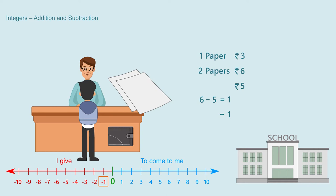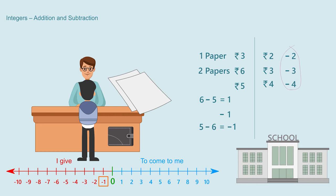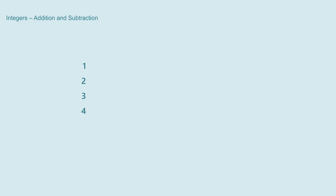If I have only 5 rupees with me and I have to spend 6 rupees, then we say that I still have to pay 1 rupee and show it as 5 minus 6 equal to minus 1. Now understand that minus 1 is also not a natural number. Similarly, if I have to pay 2, 3, or 4 rupees then we show minus 2, minus 3, minus 4, meaning that for the amount of money I have to pay we use the minus sign. Now we have 1, 2, 3, 4 as natural numbers and also 0 and minus 1, minus 2, minus 3, minus 4.